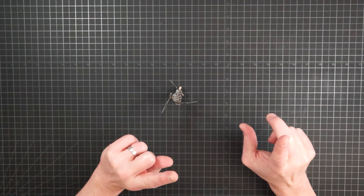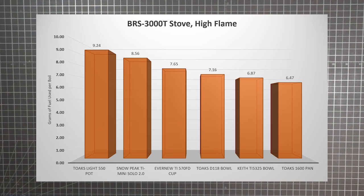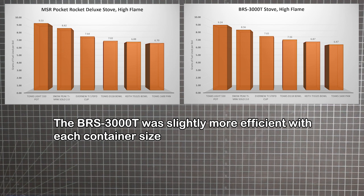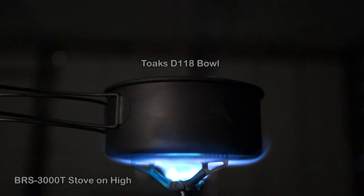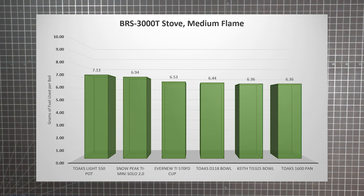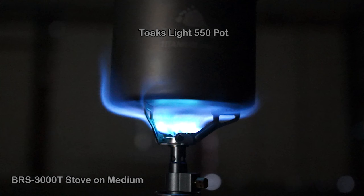The next step was to run all 18 tests, six pots, at three different flame levels with a stove of a different size. The tiny BRS-3000T posted similar numbers with familiar patterns to those of the Pocket Rocket Deluxe. A high flame showed marked improvements in efficiency with increasing pot diameter. With each container, the BRS was slightly more efficient than the rocket. And for brevity, here's what the flame splash looked like on high with three of the containers in small, medium, and wide.